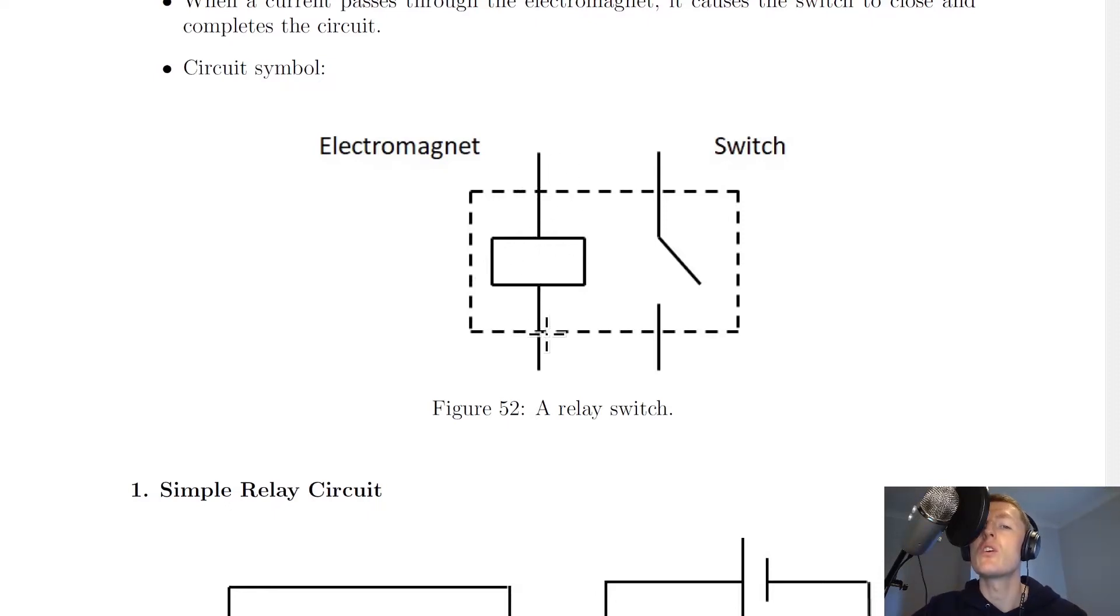And we've also got a switch near it like this. Notice how we've got this dashed line combining the two things together, and that is important to include because it suggests that the two things are working together, which they are.